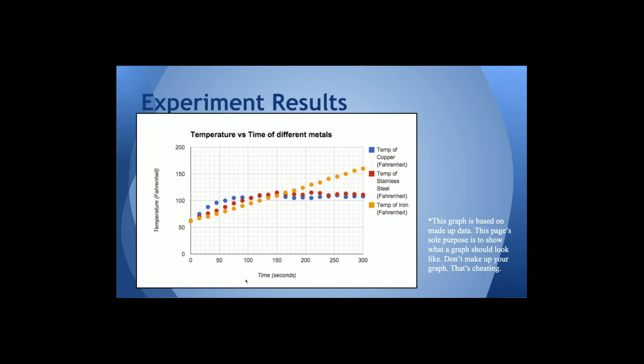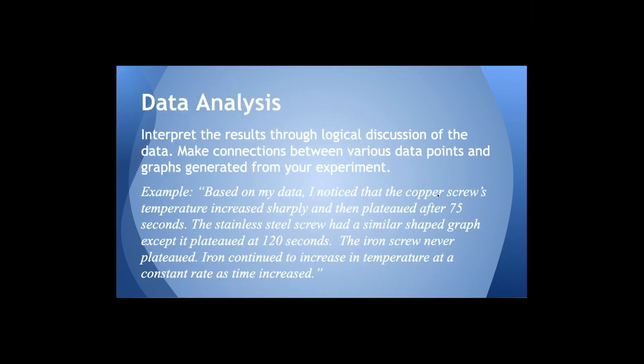Here is the graph of my results where I have time on the horizontal axis. I have temperature in Fahrenheit on the vertical axis. I've properly titled my graph. And here you can see that the iron continued to go up in a straight line, whereas copper went up and then plateaued and then stainless steel went up and then it plateaued as well.